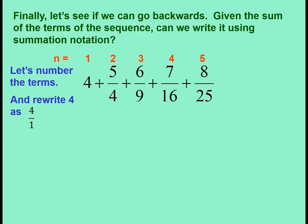And then I'm going to rewrite 4 as 4 over 1 because that establishes a pattern in the numerator and in the denominator. Notice the pattern in the numerator is that we take the term number plus 3, and the pattern in the denominator is we take the term number squared.